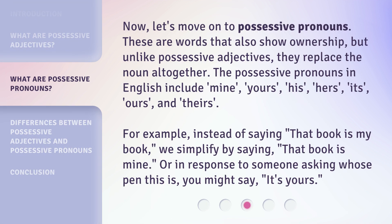Now, let's move on to possessive pronouns. These are words that also show ownership, but unlike possessive adjectives, they replace the noun altogether. The possessive pronouns in English include: mine, yours, his, hers, its, ours, and theirs. For example, instead of saying 'that book is my book,' we simplify by saying 'that book is mine.' Or in response to someone asking whose pen this is, you might say, 'It's yours.'